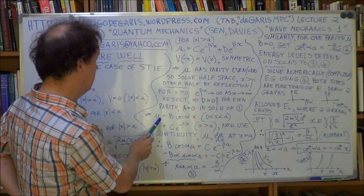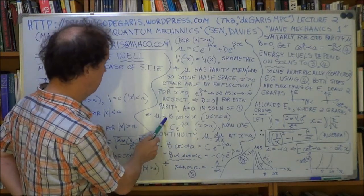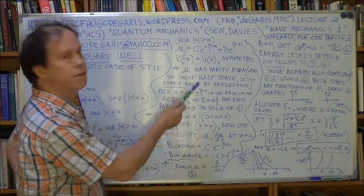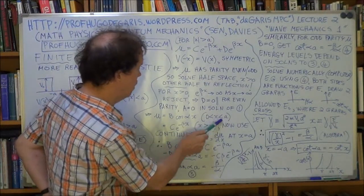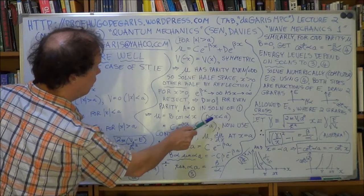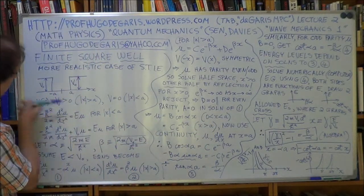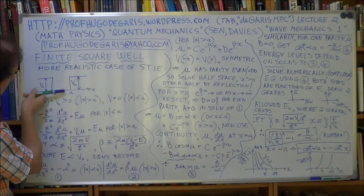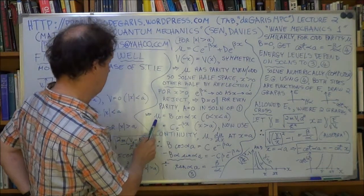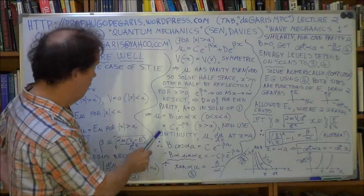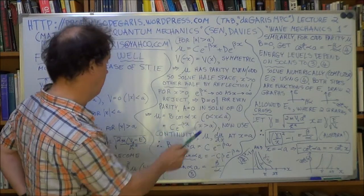So now we've got—we're left now with u is b cos, well, alpha x, in this region. So between naught and a. So we're talking about from here to here. And in that region the solution u, your wave function, is of the form b cos alpha x.